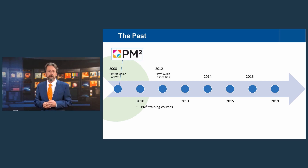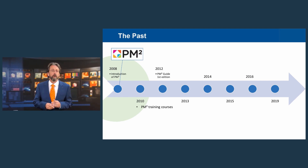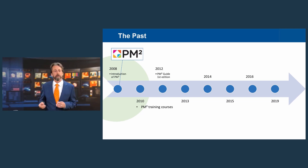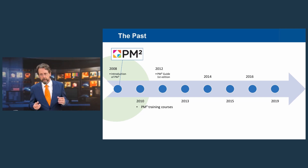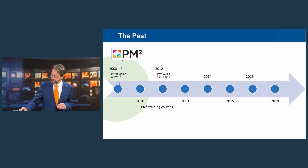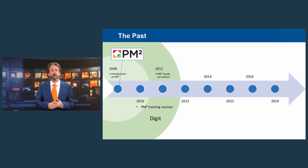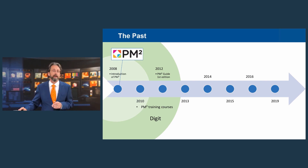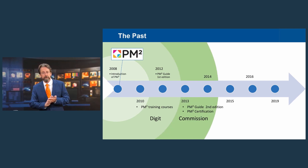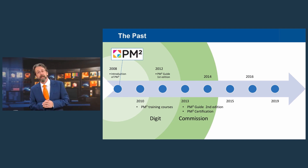The origins of PM2 as a project management methodology can be found in 2008 when it was first launched within DIGIT. Around 2010, training courses started to be organized introducing people to PM2, and it was used mainly within DIGIT for IT projects. With the first release of the PM2 guide in 2012, the methodology became more widely used.